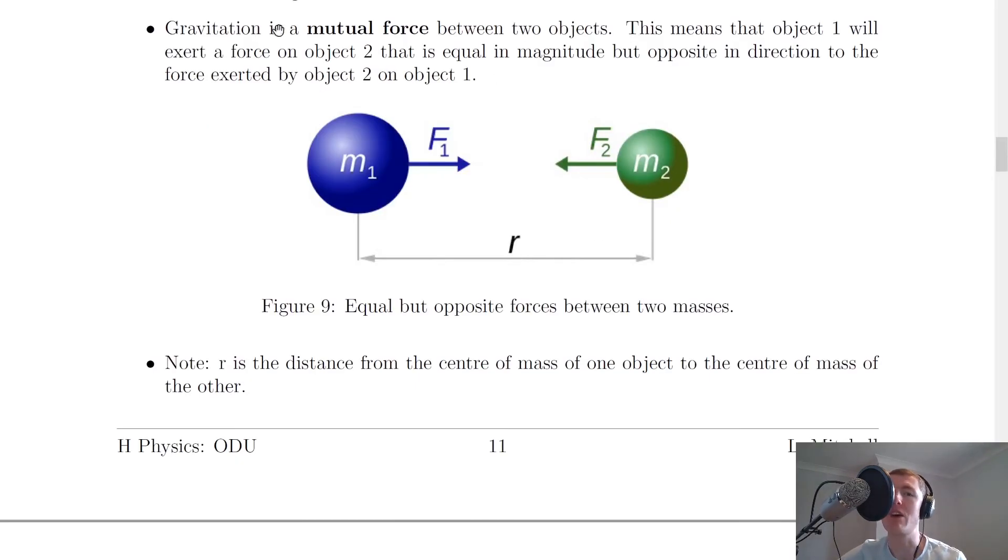Going back to the notes, we have one last thing to look at. Gravitation is a mutual force between two objects. This means that object 1 will exert a force on object 2 that is equal in magnitude but opposite in direction to the force exerted by object 2 on object 1. We've just seen that in our animation.